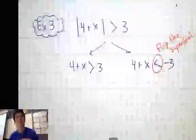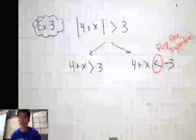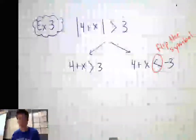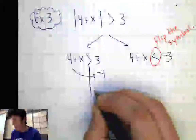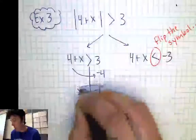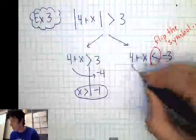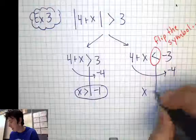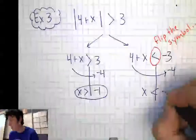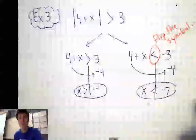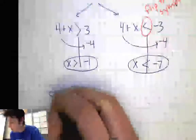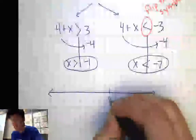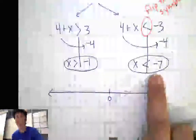Let me show you the answer to explain why I'm flipping the sign. Solving the first: subtract 4 — x is greater than negative 1. Solving the second: subtract 4 — x is less than negative 7. So those are my two answers. Because these are inequalities, I'm going to put them on a number line, draw my number line with 0 on it, and focus on the boundary points negative 1 and negative 7.